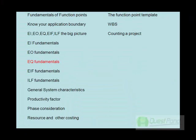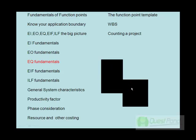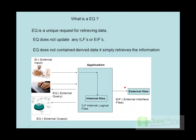Now that we have understood the two important fundamentals, EI and EO, let's try to understand the third important aspect of function point, that is EQ — external queries. Basically, external queries are nothing but unique requests for retrieving data. One important aspect of external query is that it does not update any ILFs or EIFs. You might compare this with EO, since EO also helped you retrieve complex data. How is EQ different? Basically, EQ only retrieves simple information.